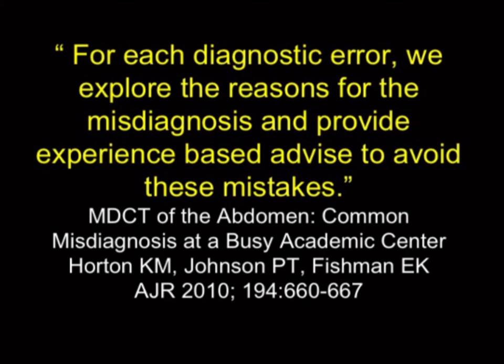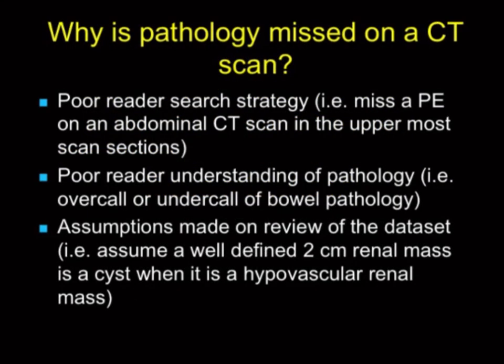From a generic perspective, why do we miss things? It's often a poor search strategy. On an abdominal CT for rule-out pancreatitis, we may focus on the pancreas, liver, and other targets, but not pay enough attention to the lung bases and miss a PE. We make assumptions — looking at a trauma case with a well-defined, relatively low-density mass in the kidney, you assume it's a cyst. But if you put a cursor there, it reads 55 Hounsfield units and was a papillary renal cell carcinoma.